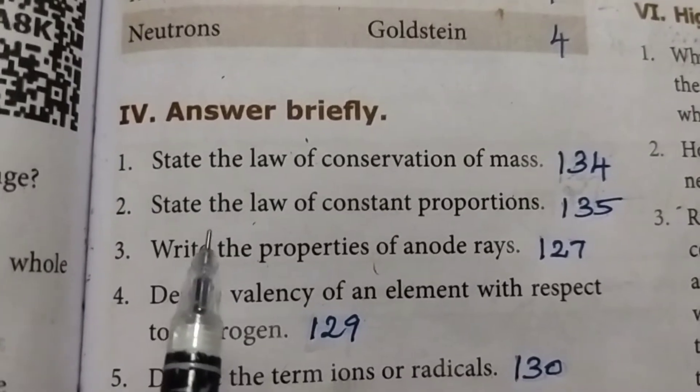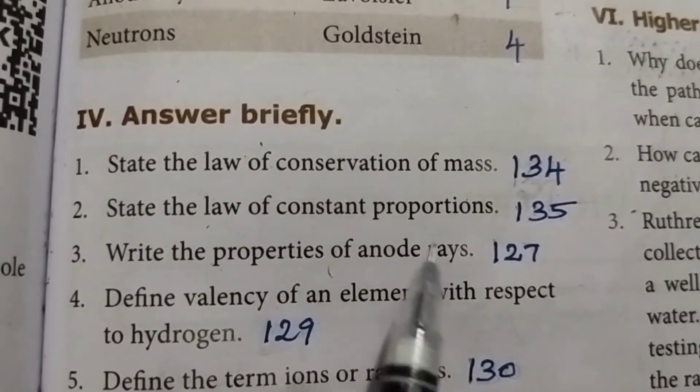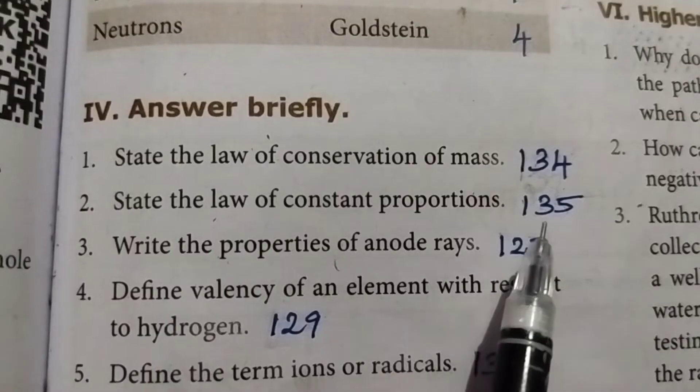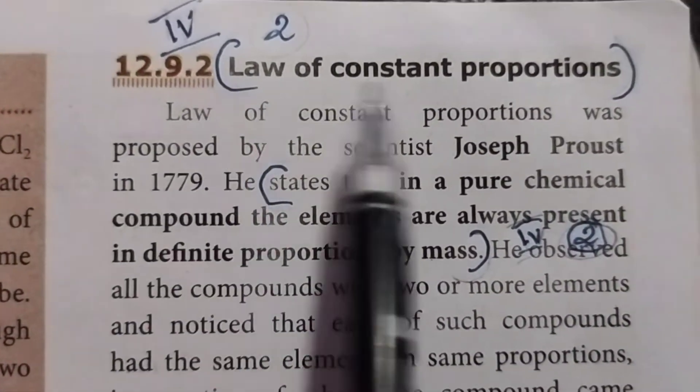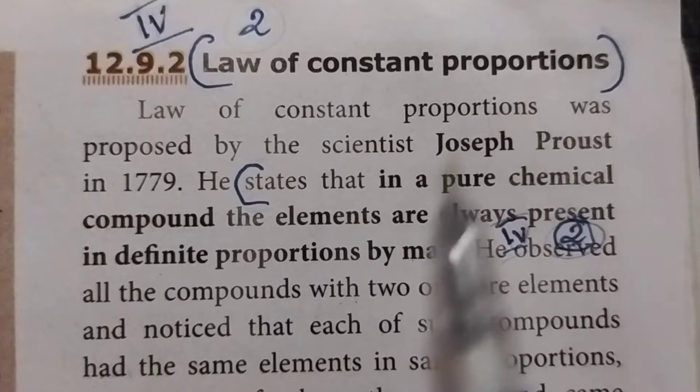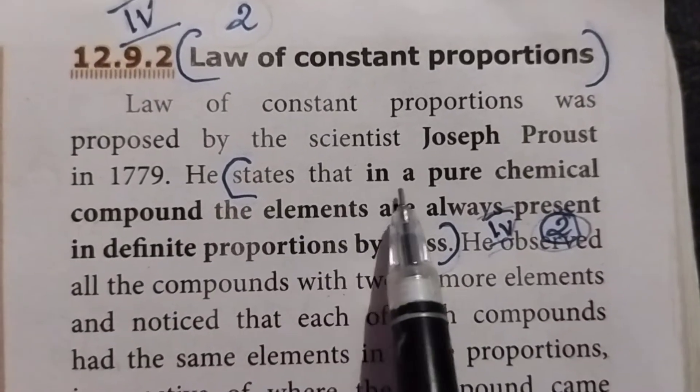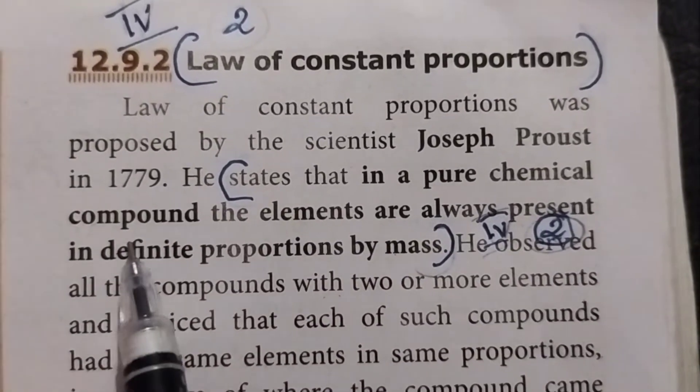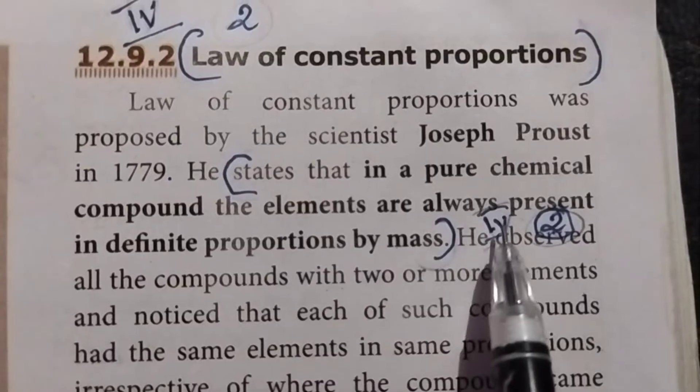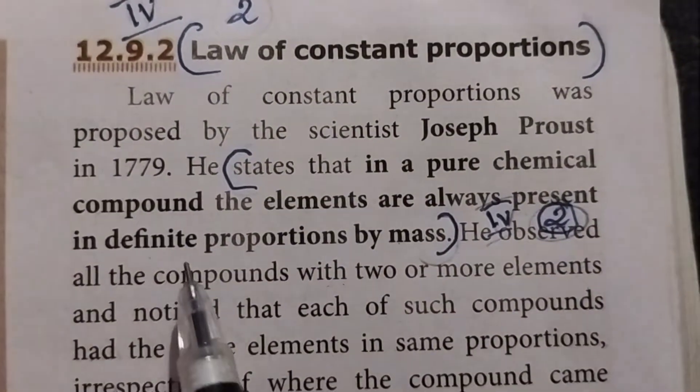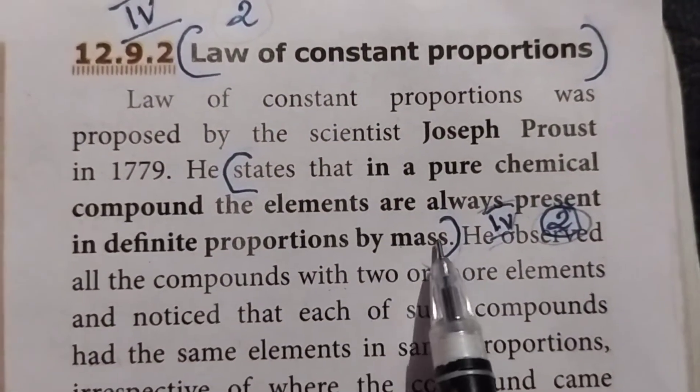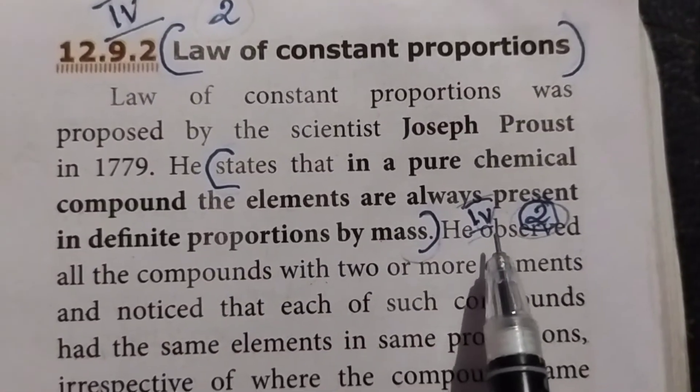Second question: state the law of constant proportions. Take page number 135. Law of constant proportions states that in a pure chemical compound, the elements are always present in definite proportion by mass. Fourth Roman letter, second question answer.